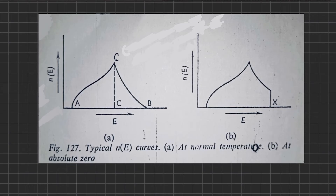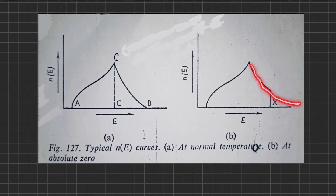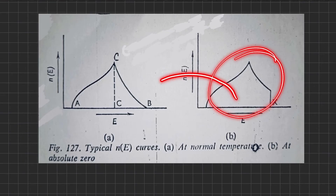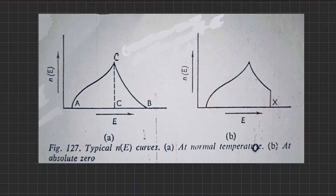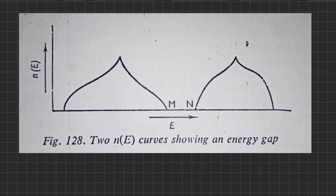At absolute zero it is assumed that available electrons occupy all the lowest available energy levels within the band. If the highest of these occupied levels has an energy of X, there will be no electron with a higher energy value; the right-hand boundary of the small N(E) curve will therefore be at X. However, at high temperature, thermal energy will promote at least some electrons into levels with energy higher than X, so the vertical boundary disappears and it converts into a slope, reverting to the curve seen at normal temperature.